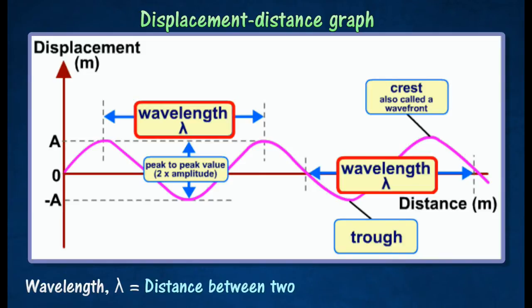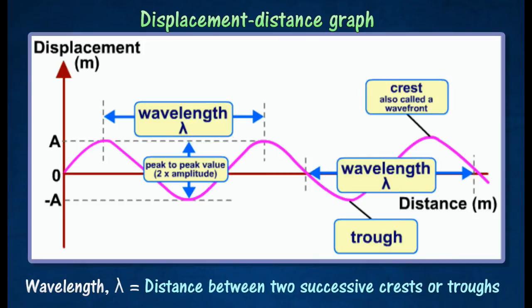Wavelength is the distance between two successive crests or two successive troughs on a wave. The distance between two points of the same phase also equals the wavelength.